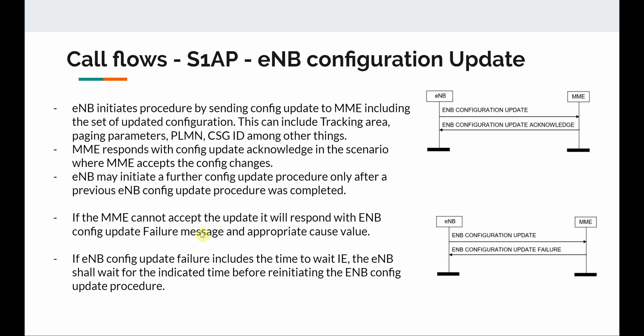If the MME cannot accept the update, it will respond with an eNodeB config update failure message and an appropriate cause value indicating why the message failed. If the failure message includes a 'time to wait' information element, the eNodeB shall wait for the indicated time before re-initiating the procedure. This mechanism allows the MME to tell the eNodeB to wait — useful when there are too many updates, congestion, or overload on the MME.